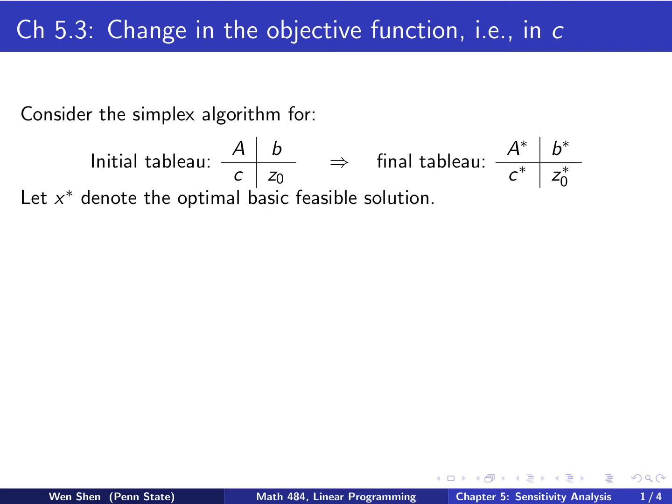Let's get started. We consider the following simplex algorithm to solve a linear programming problem. Here on the left, this is the initial tableau. We denote it by coefficient matrix A, and then b here, c here, and z naught. After a sequence of pivot steps, we reach the final tableau, where we put a star on all the coefficients to denote that they are different. Assume that for the final tableau, x star is the optimal basic feasible solution. We are interested in the following question: if for the objective function coefficient vector c here, if one of the entries like ci is changed...